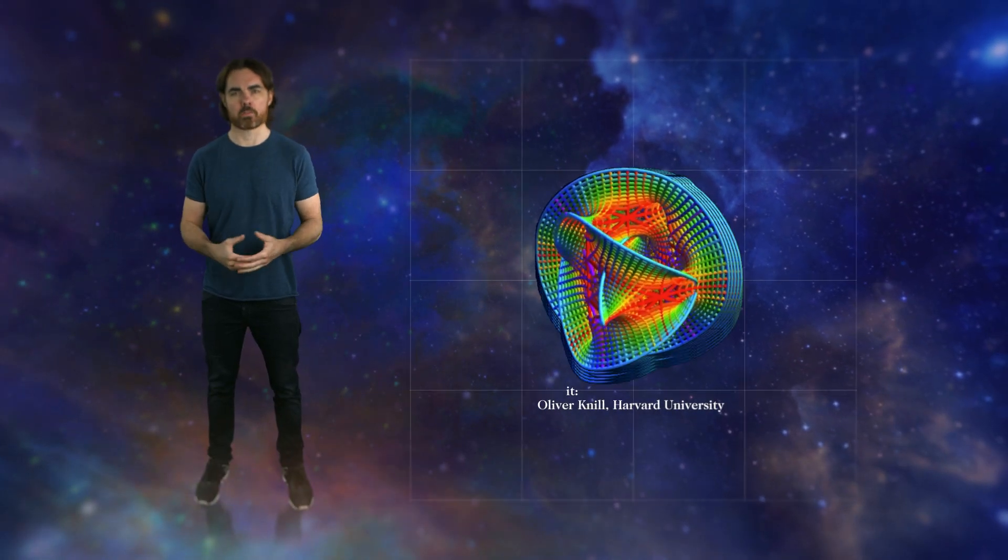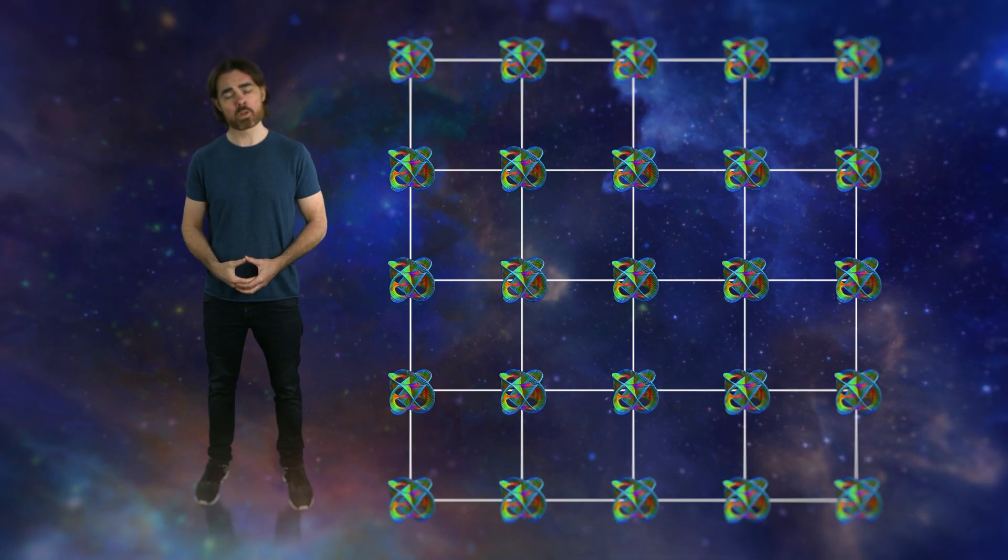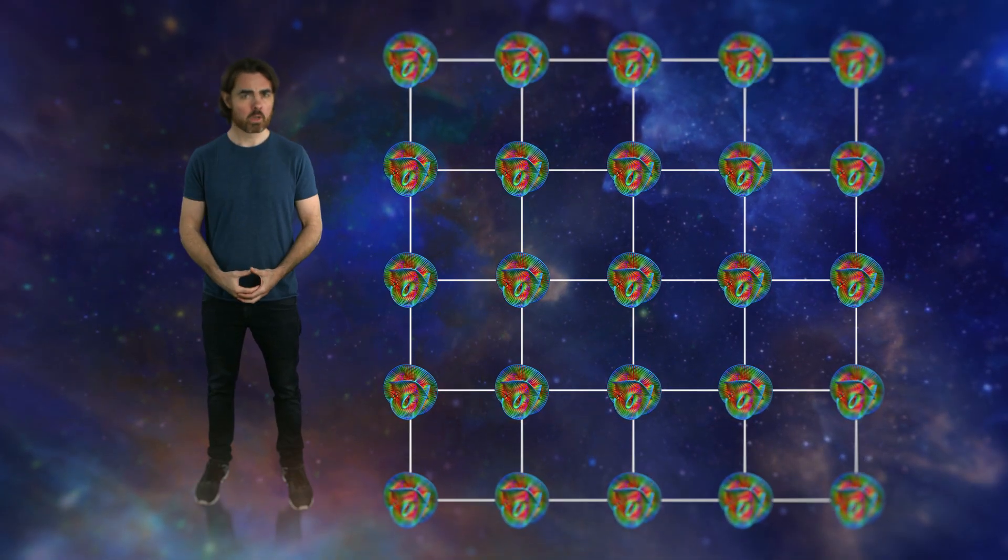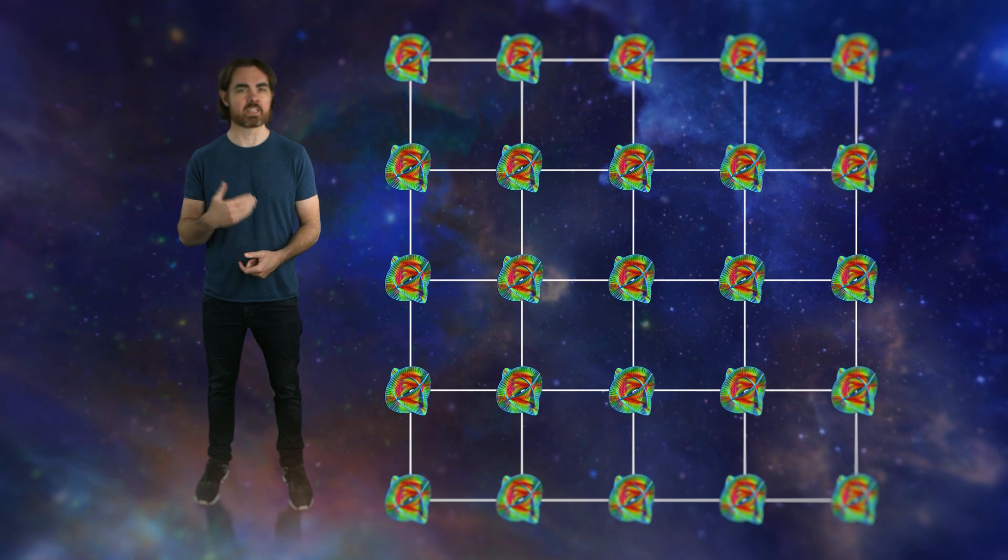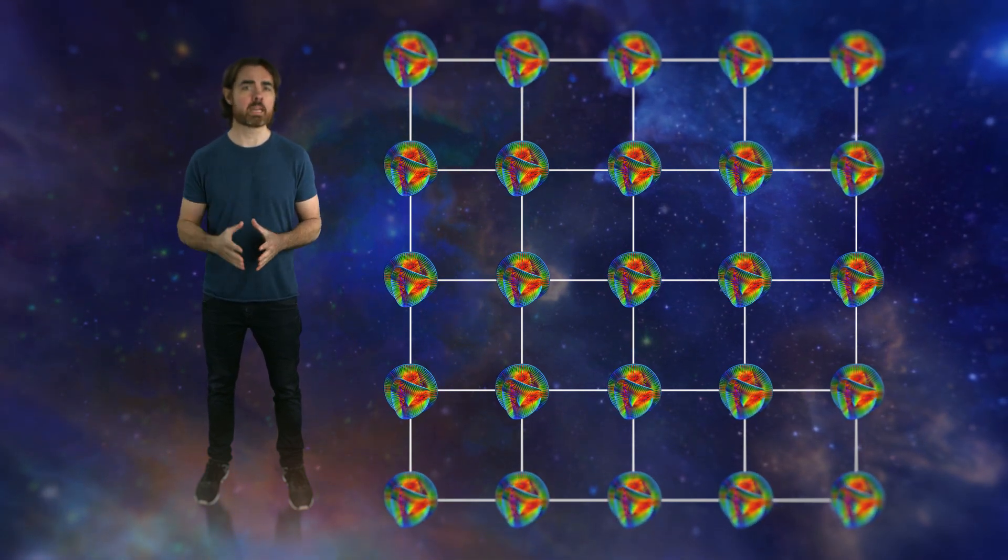In fact, if string theory makes any predictions, it's the existence of exactly this number of extra dimensions. And this is where string theory starts to look less attractive. Our universe has three spatial dimensions. String theorists hypothesize that the extra dimensions are coiled on themselves so they can't be seen. But that seems like a hell of an extra thing to add in order to make your theory work. There's also no experimental evidence of the existence of these dimensions. And that's just the first of many problems of string theory.